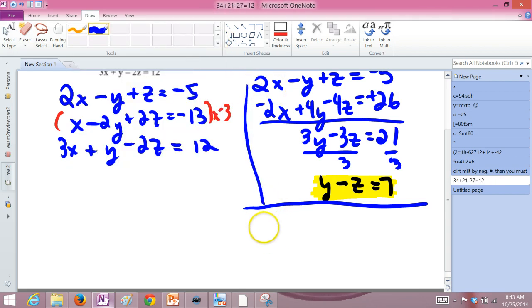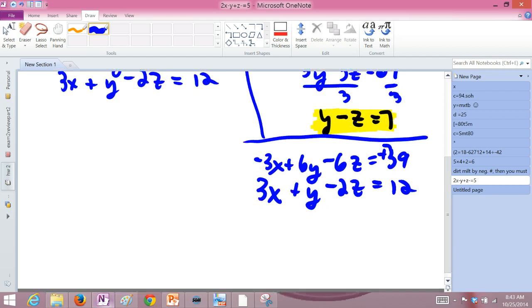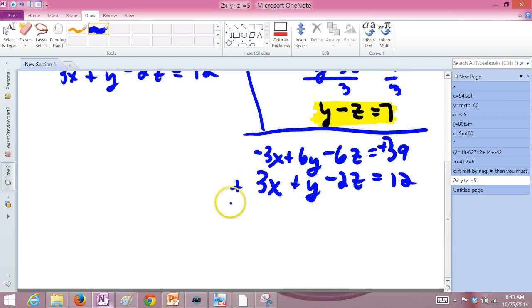All right, so doing that gives negative 3x, positive 6y, negative 6z, positive 39. Then take the third equation, unaltered.